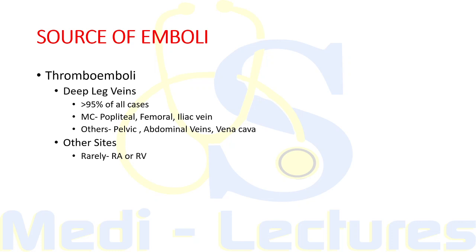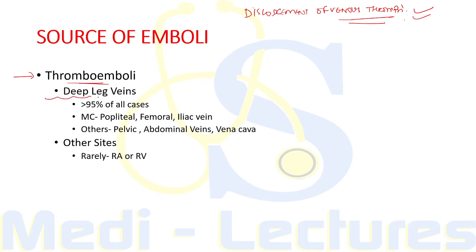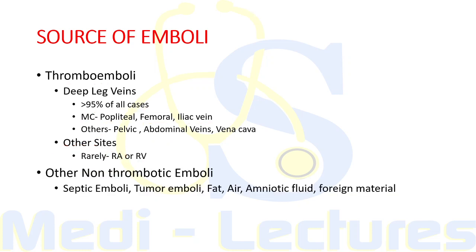Pulmonary embolism usually results from dislodgement of venous thrombi. The source can be thromboemboli — formation of a thrombus followed by dislodgement. Thromboemboli most commonly occur through deep leg veins, responsible for more than 95 percent of all cases. The most common veins include popliteal, femoral, and iliac veins. Rarely involved are pelvic veins, abdominal veins, vena cava, right atrium, or right ventricle.